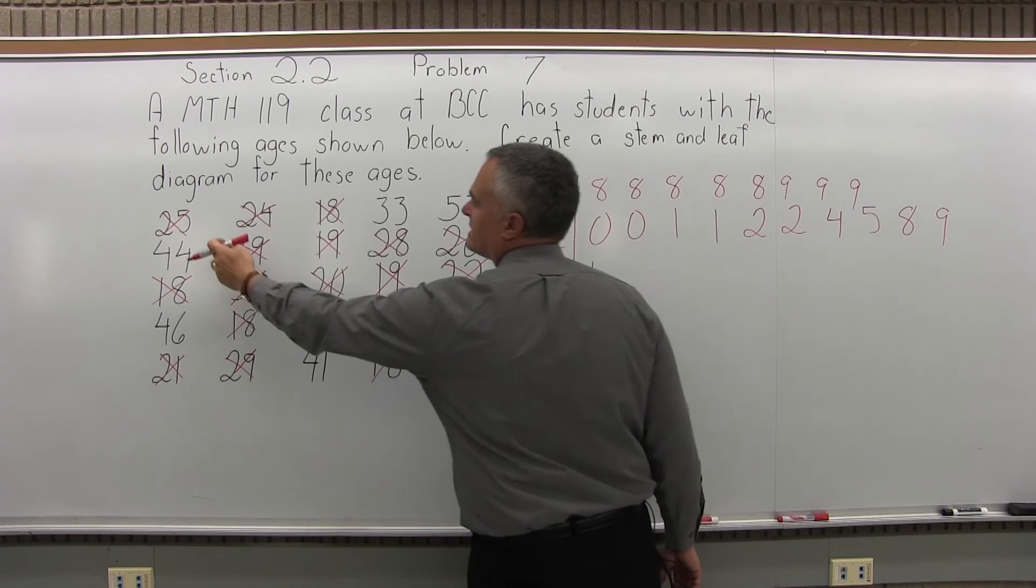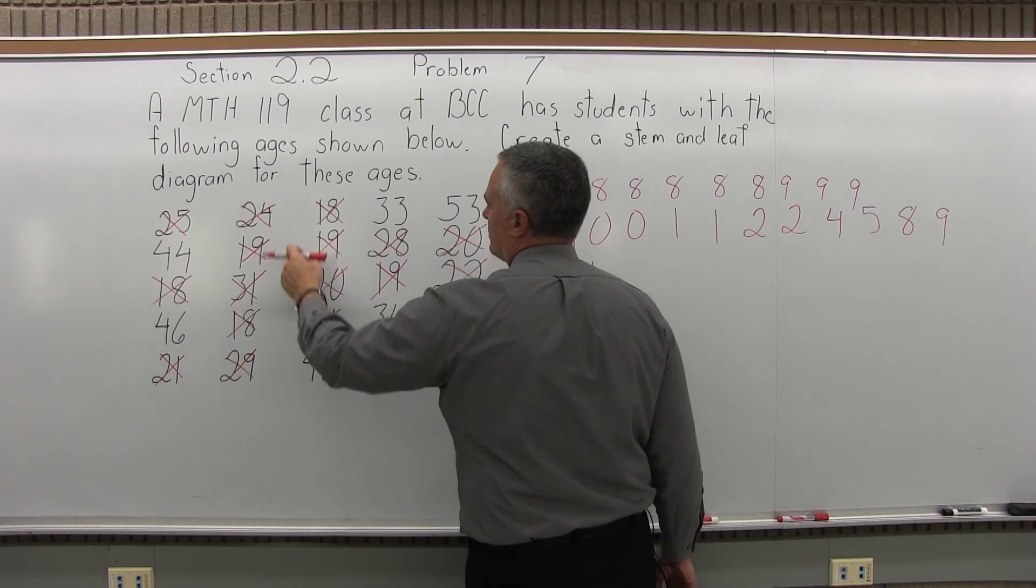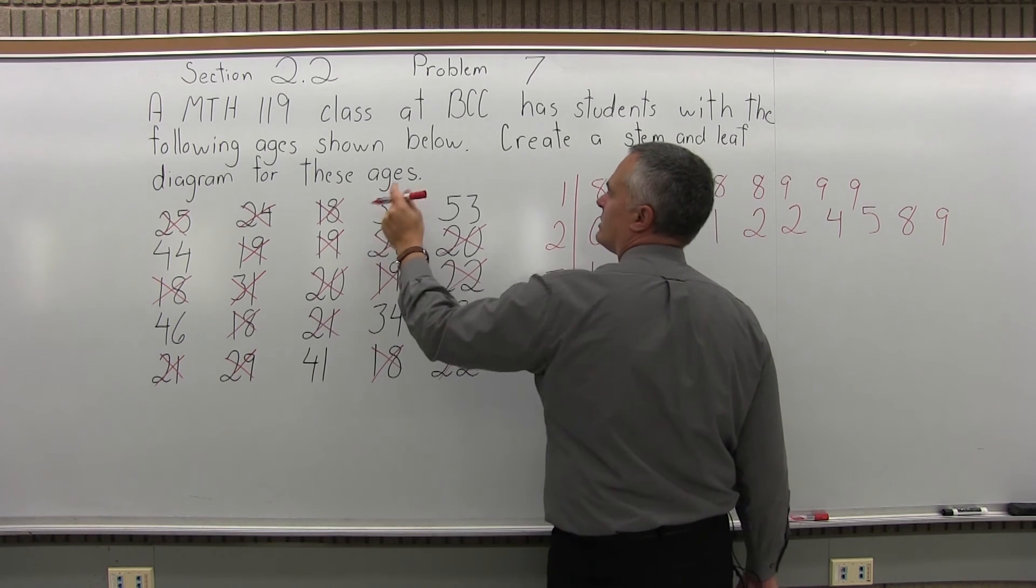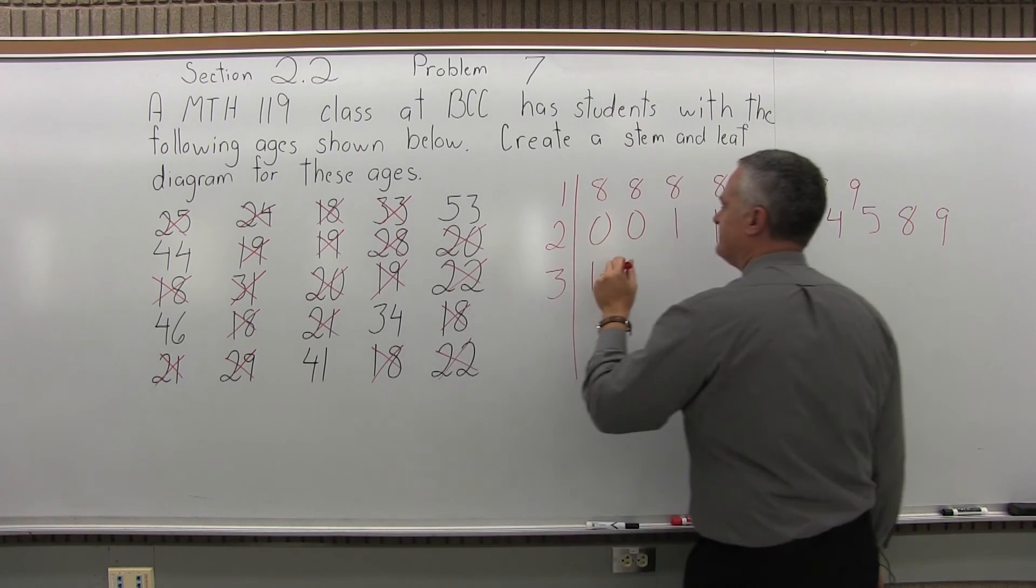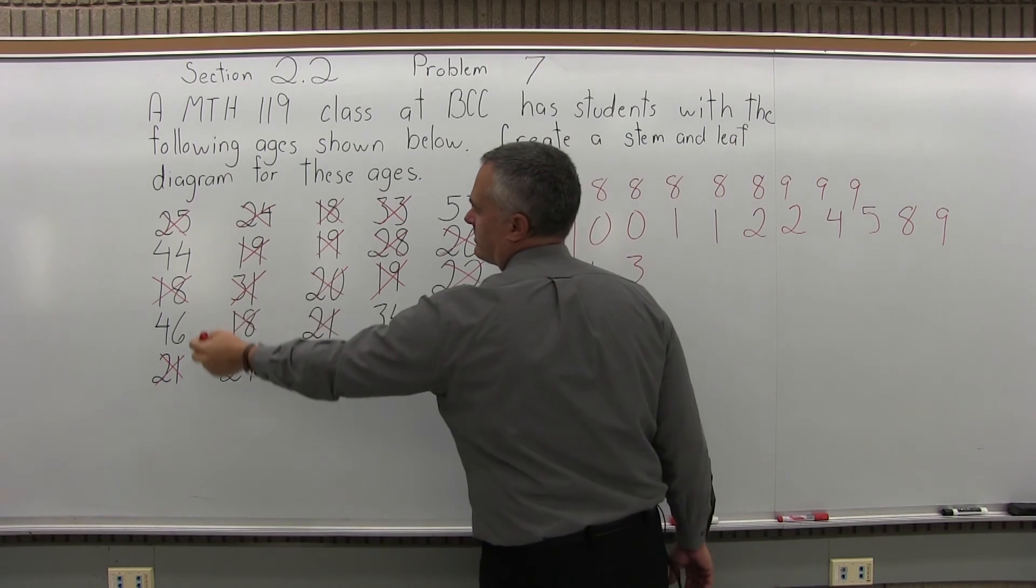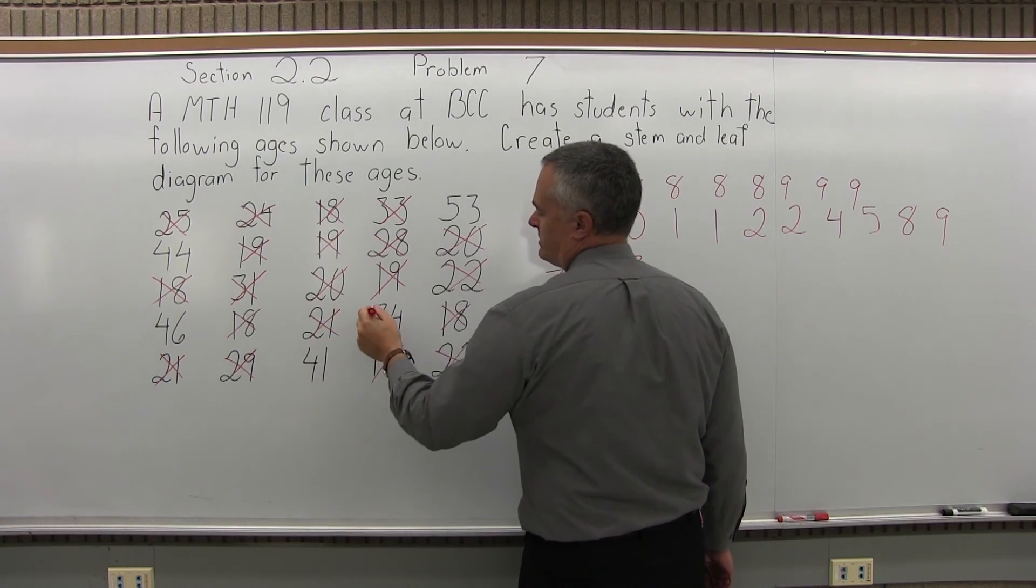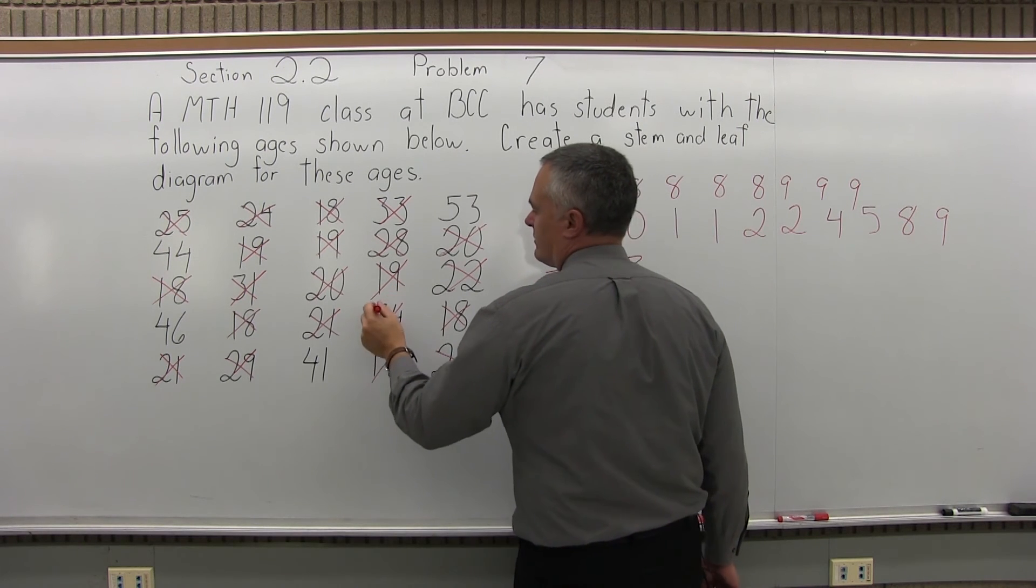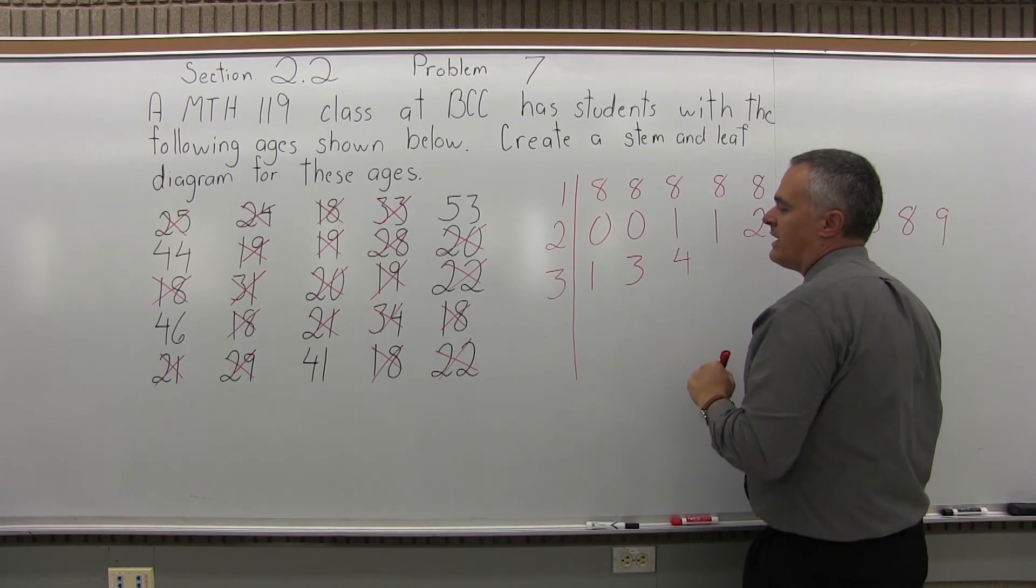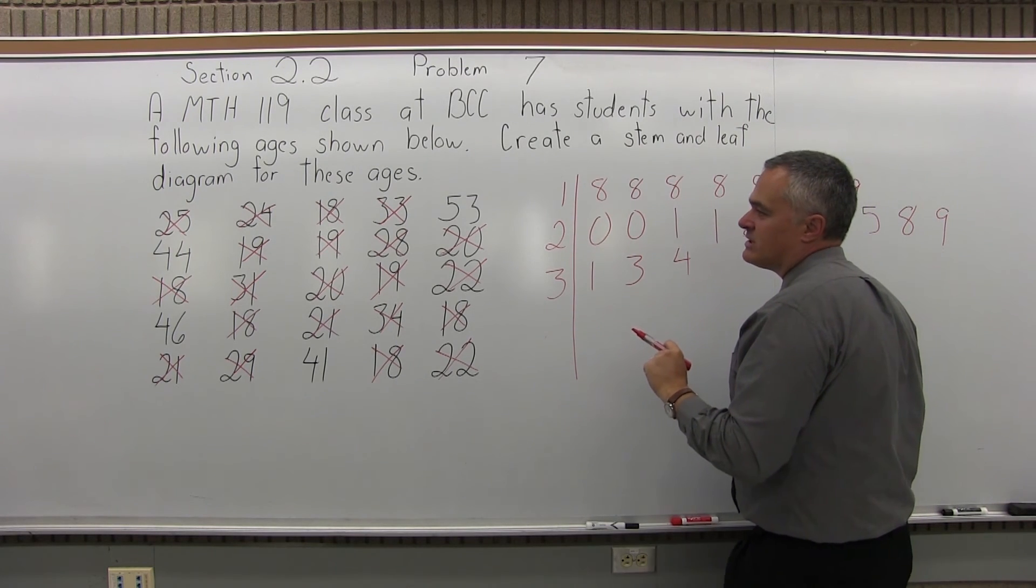33 is next. You want to systematically go through. I saw one here, but you want to look at everything. So 33, there's only 1, so I put a 3. 34, no, no, yes, there's only 1, so 34. Again, I have the 3, here's the 4. That means it's 34. That's it for students in their 30s. If you look for anyone else in their 30s, there's no one left.